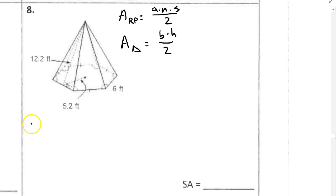So let's start with the base. I have the area of the base. That's our regular hexagon. So that's a. The apothem is 5.2. The number of sides is 6. The length of each side is also 6. Divided by 2. And that should give us 93.6.